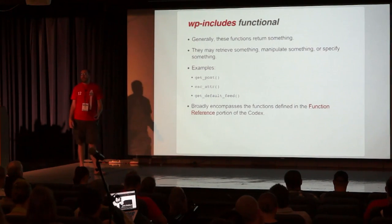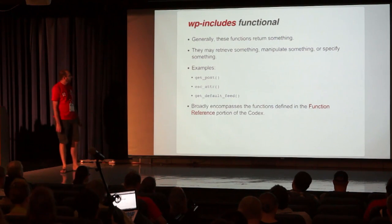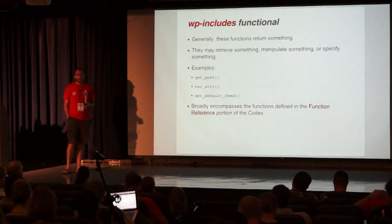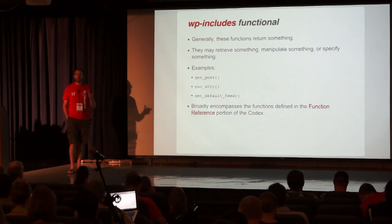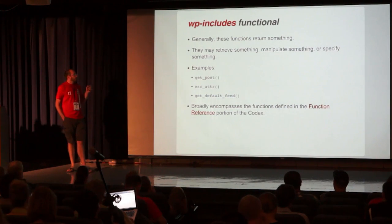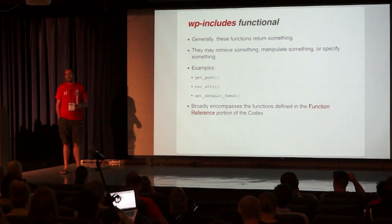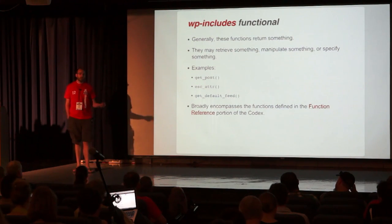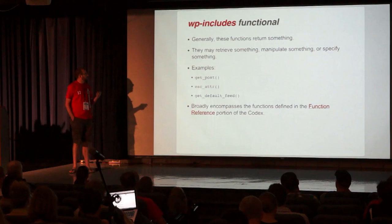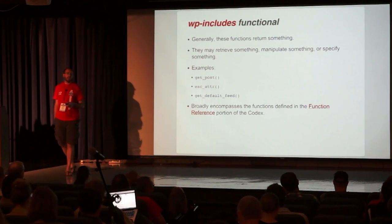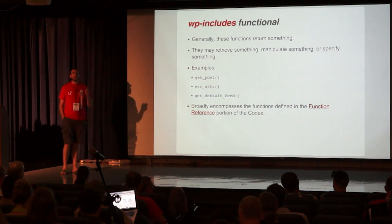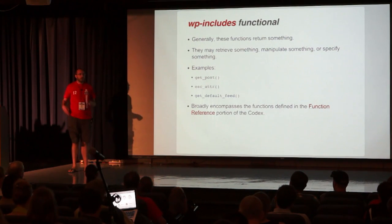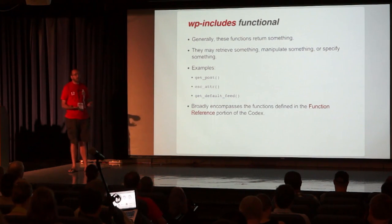And then last — this is really a catch-all for anything that doesn't fall into one of those two other categories. These are functions that by and large return something. So when you're creating a theme, you can call 'the_title' — you don't have to echo it, it just outputs the title of the post to the browser. Underneath that, there's a function called get_the_title that actually goes and gets it from the database. That returns it, because you may want to get the title and then do something to it before you output it. So you have get_permalink, you can do something with it, pass it off, and then echo it somewhere else.